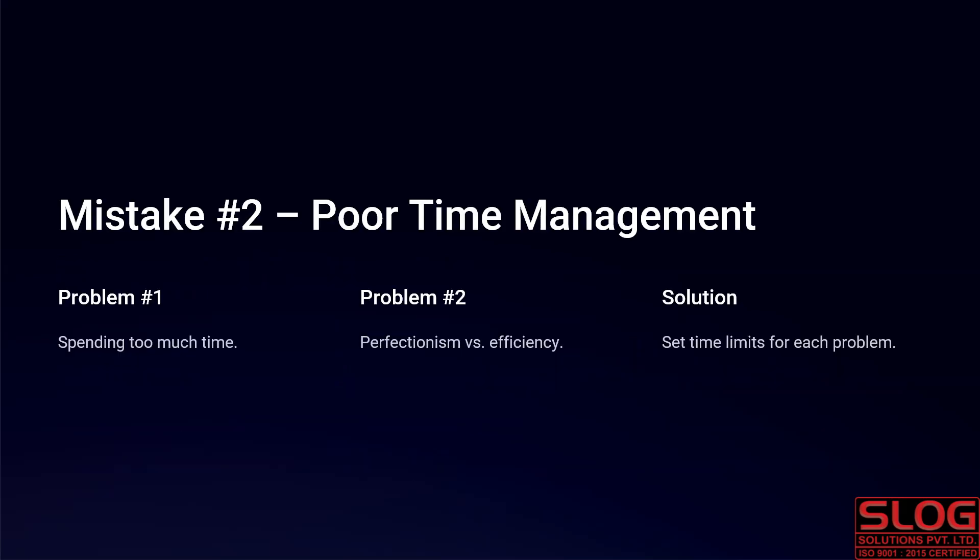The second common mistake is poor time management. There are two types of problems here. Problem one is spending too much time — you spend more time than you actually need on a problem. Problem two is perfectionism vs efficiency: either you want to be perfect or you want to be efficient. You don't have to work hard — you have to work smart. We need to be efficient, not perfect.